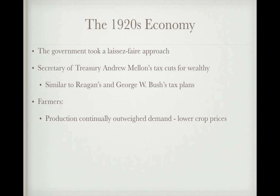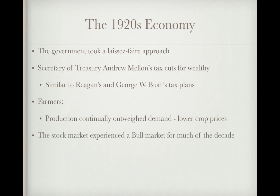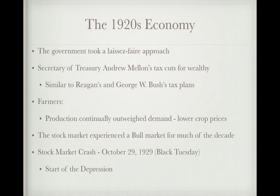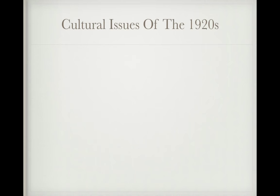Farmers during the 1920s continued producing at very high rates that outweighed demand, lowering crop prices. When in debt, farmers throughout American history tend to produce more hoping to make money, but that drops prices further — a cycle that would continue until the New Deal. The stock market experienced a bull market for much of the decade, but on October 29, 1929 — Black Tuesday — the stock market crashed, which many point to as the start of the Great Depression. Banks closed throughout the early 1930s and many people lost their money.